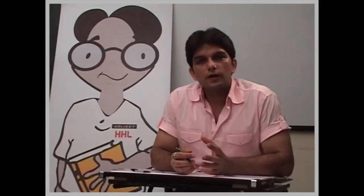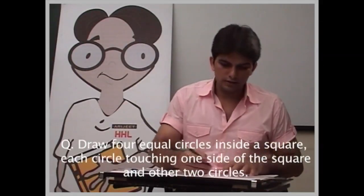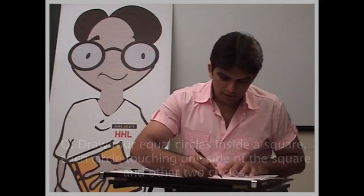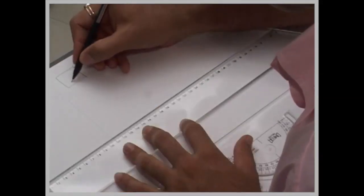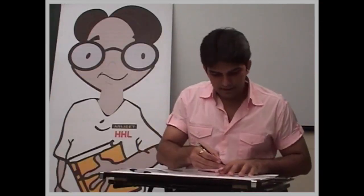In a square, we are going to draw four circles touching one side and other two circles. A rough background will be something like this. Now see, in this the method will remain the same.